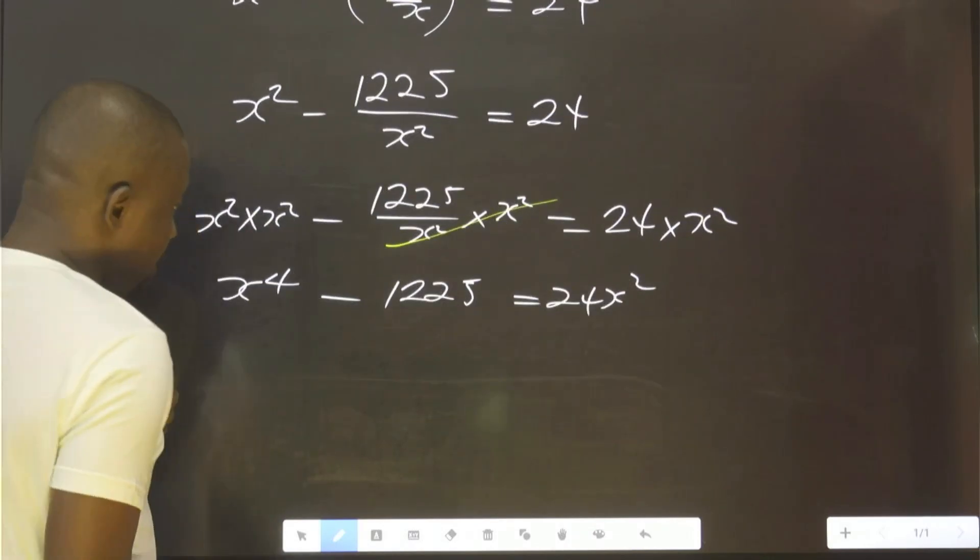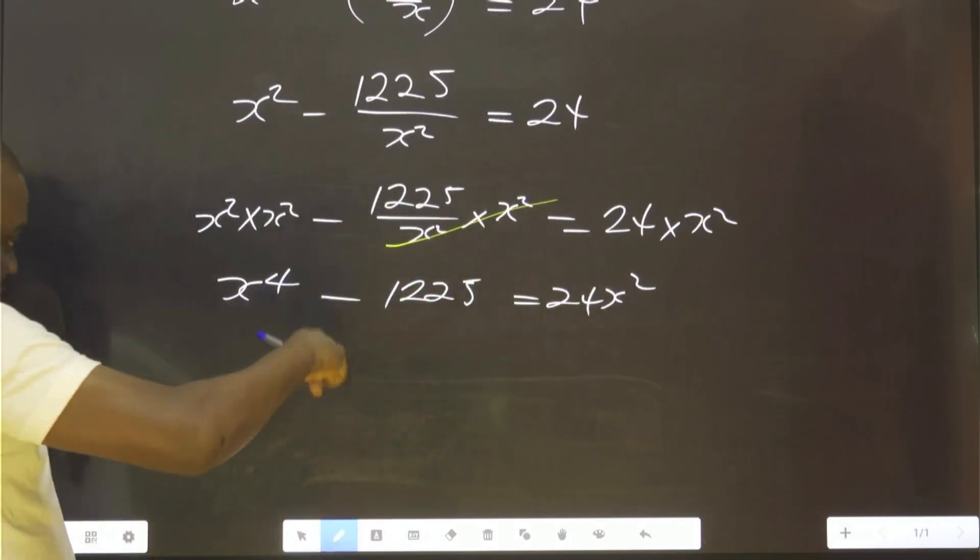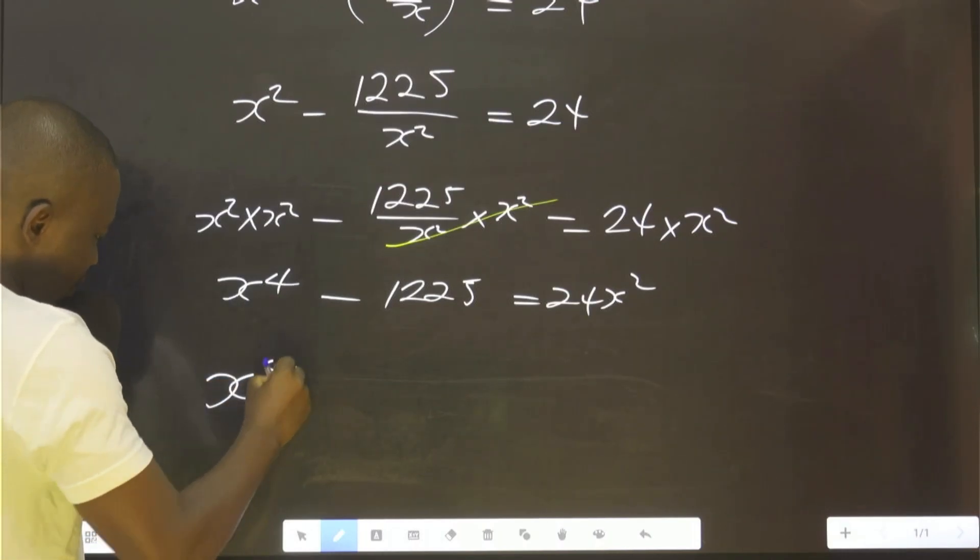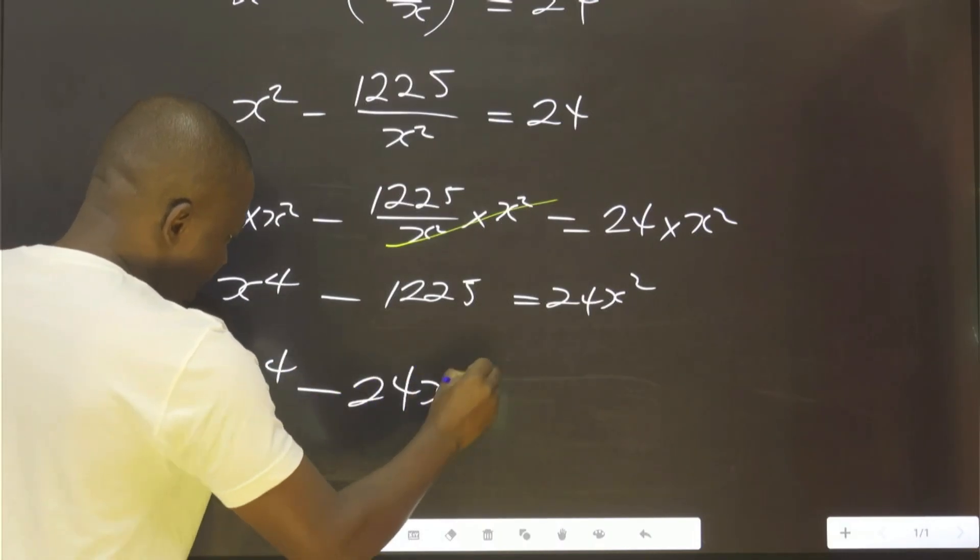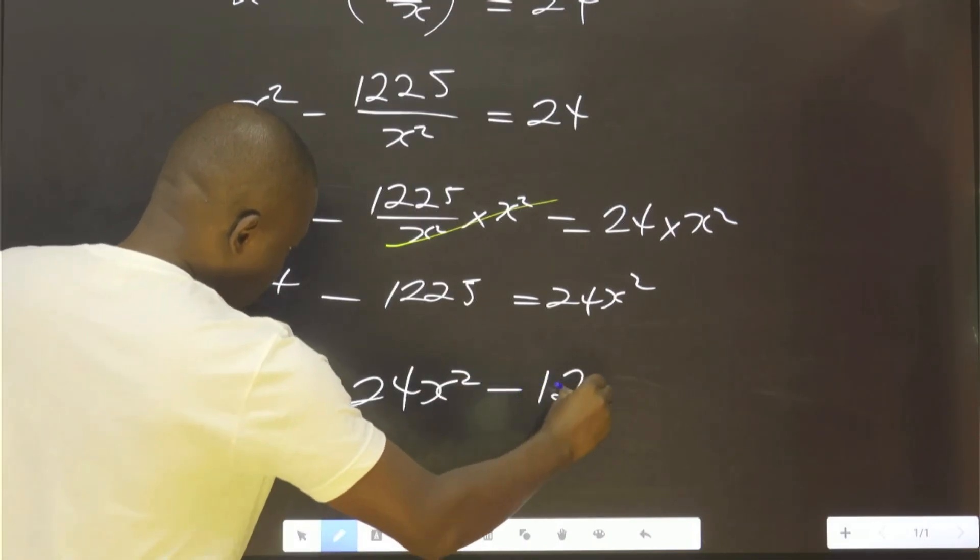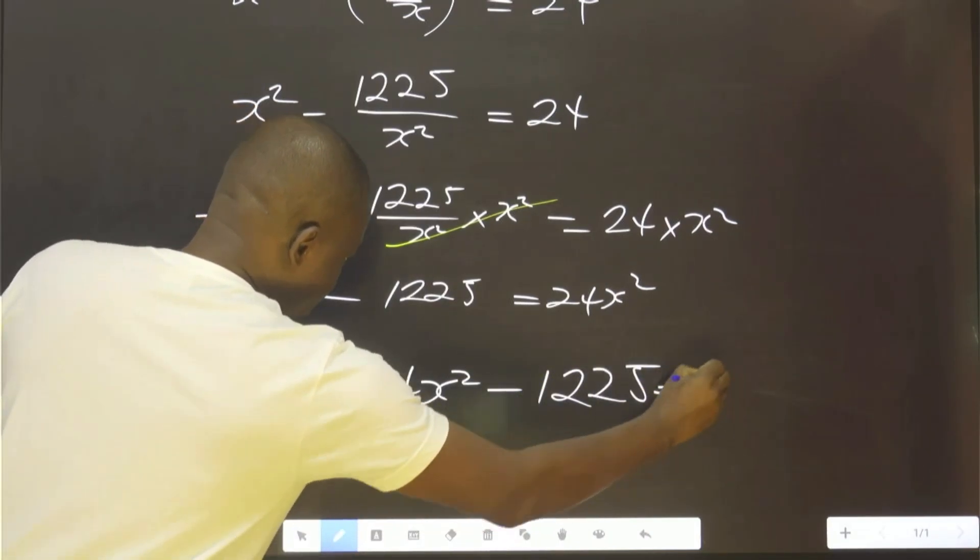With this now, let's rearrange this by bringing this to the left-hand side. That is x⁴ - 24x² - 1225 = 0.